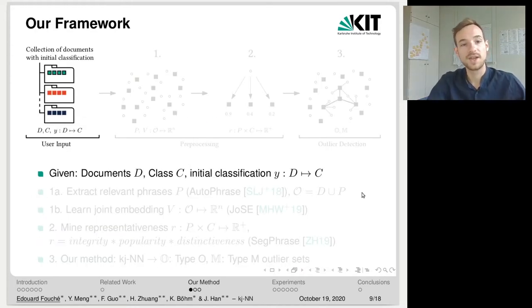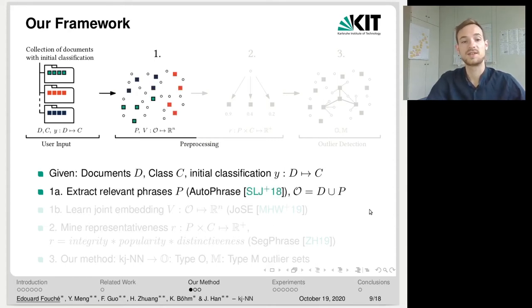Our framework is as follows. We assume that we are given a set of documents D, a set of classes C, and an initial but perhaps imperfect classification Y, which maps each document d to a class c. Our first step is to extract the relevant phrases from the set of documents D using an approach known as AutoPhrase. So the outcome is a set of phrases P. And we define the set O as the union of the set of documents and the set of phrases. So O is a set of all text objects.